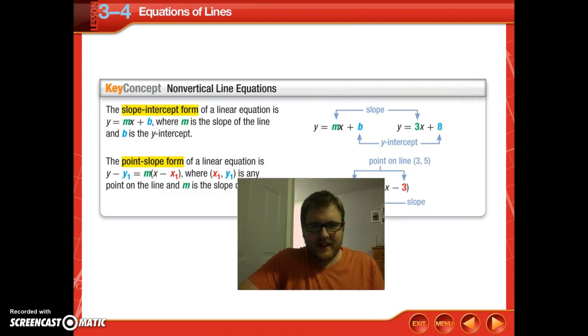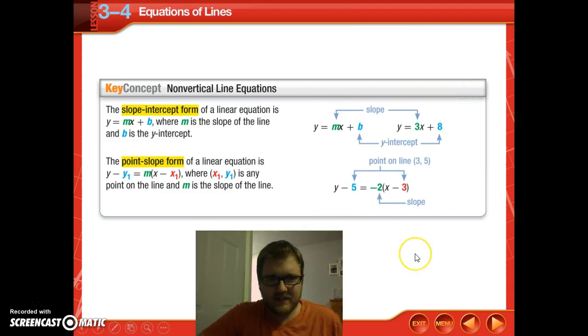And here are the key definitions for those two terms. You should remember from Algebra 1 that the slope-intercept form of a linear equation is y equals mx plus b. We're calling m the slope of the line, and b is the point where it crosses the y-axis. So the y value where it crosses the axis, which is otherwise known as the y-intercept.